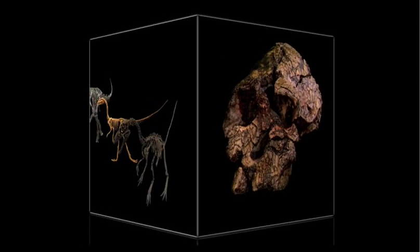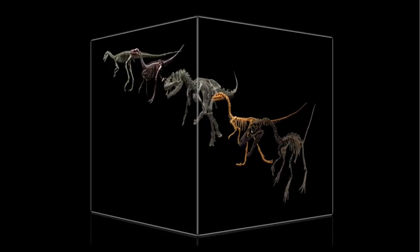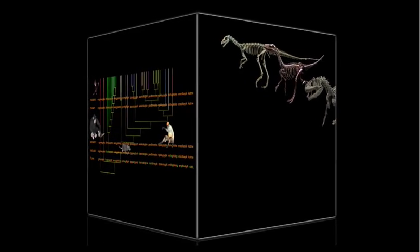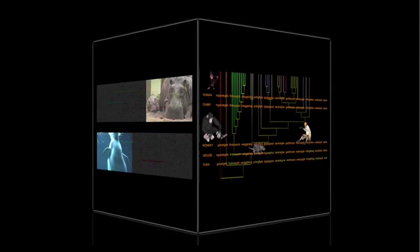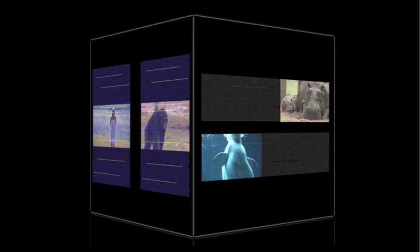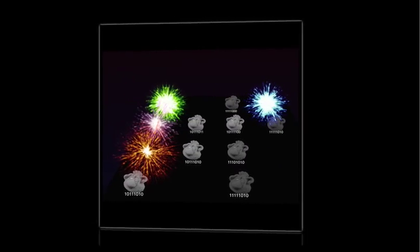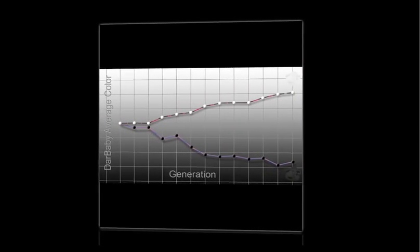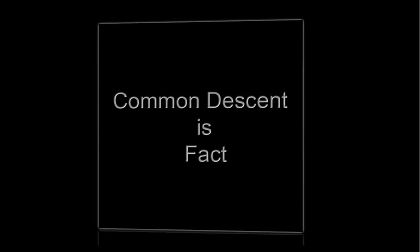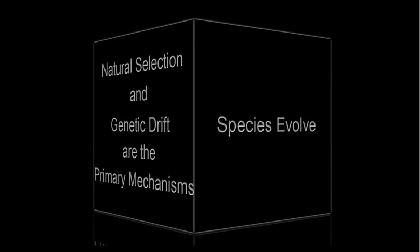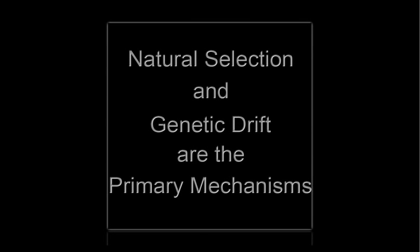There are many more issues that scientists must pursue, going by names such as punctuated equilibrium, bottlenecks, and founder effects. But you have just seen how it happens. It really works. Common descent is a fact. Species evolve. Natural selection and genetic drift are the primary mechanisms.